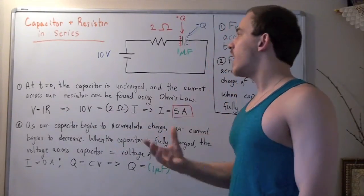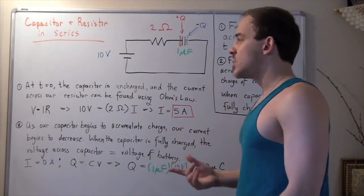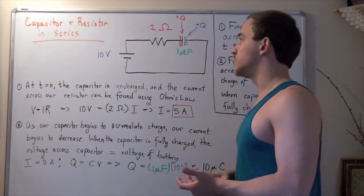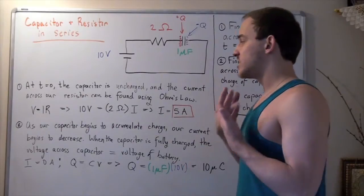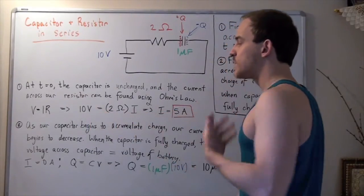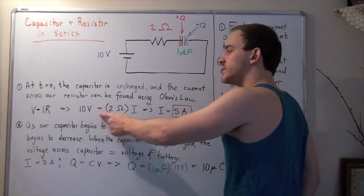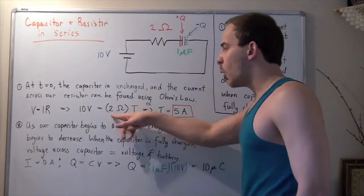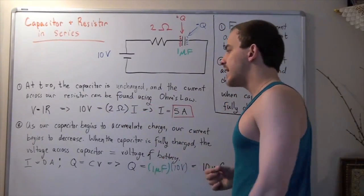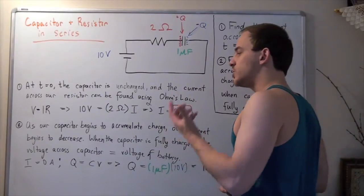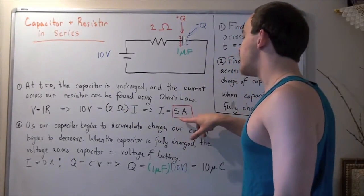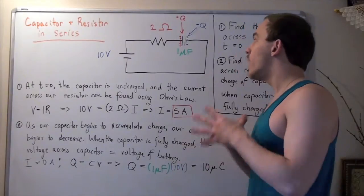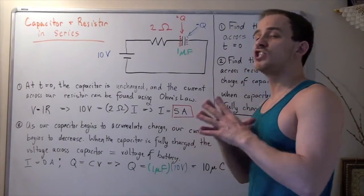Our current through our resistor just begins to move, and that means we can simply apply Ohm's law — V equals IR — to find our current. We know our voltage across our resistor is 10 volts and we know our resistance is 2 ohms. So we plug in our values: 10 volts equals 2 ohms times our unknown current. Dividing, we get 10 volts divided by 2 ohms gives us 5 amperes. So at time equals zero, when our capacitor is fully uncharged, our current through our resistor is 5 amperes.